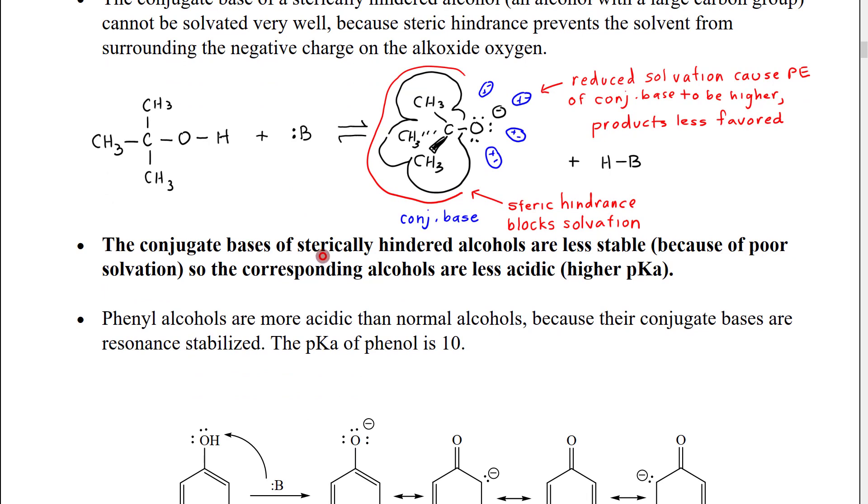So, the conjugate bases of sterically hindered alcohols are less stable, making the corresponding alcohols less acidic. In other words, the pKa number would be higher.